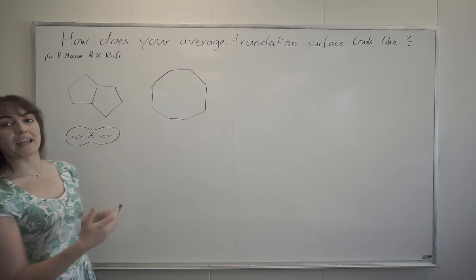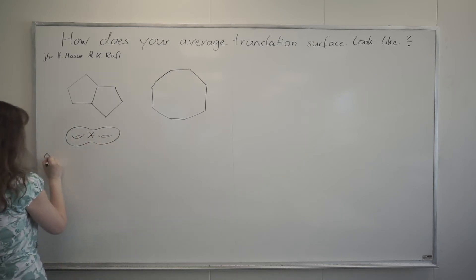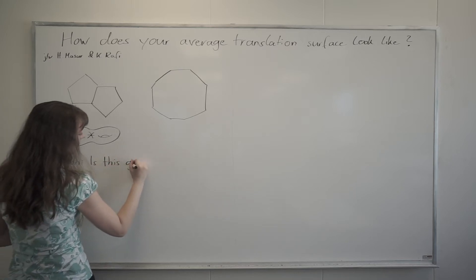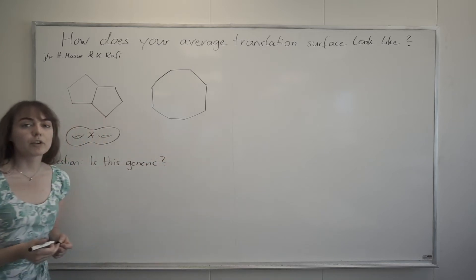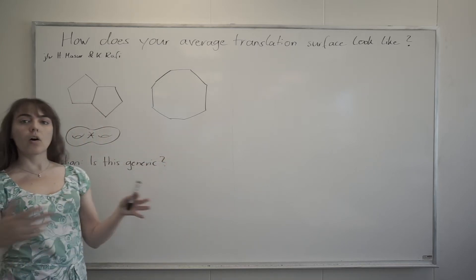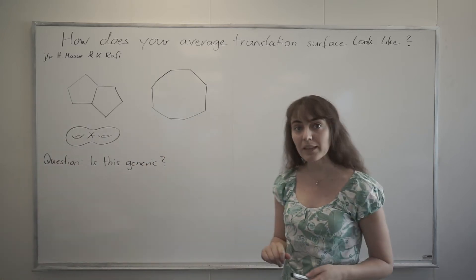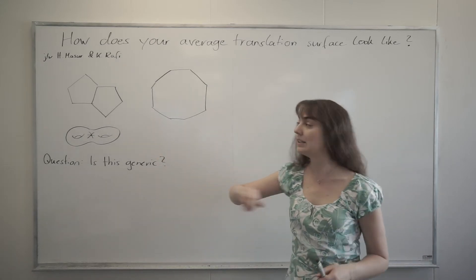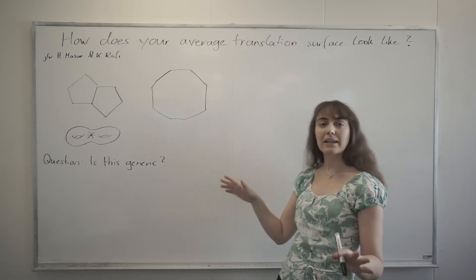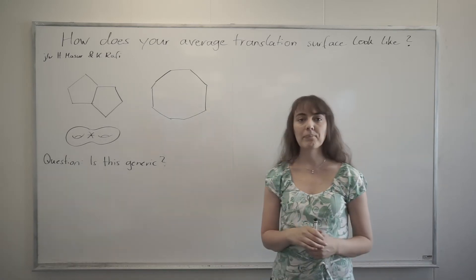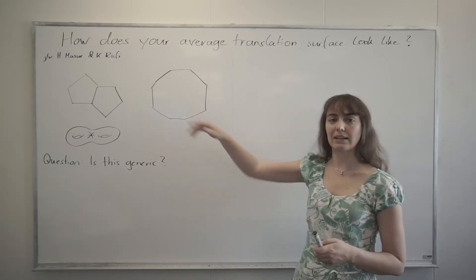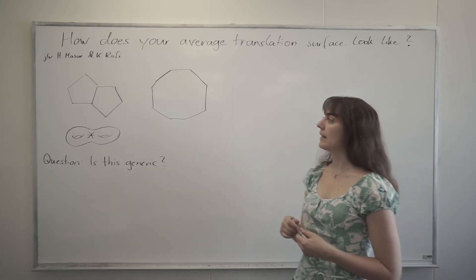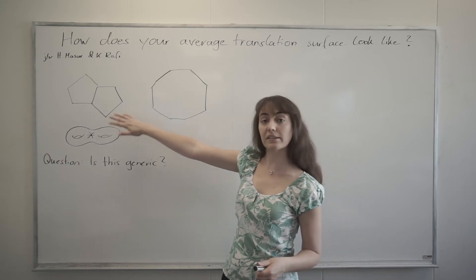But the question is, everyone starts with that, but is this generic? And what I mean by generic is if you take all the translation surfaces of genus 2 and you pick one randomly, is it likely that you get this translation surface or perhaps this? Now they're infinitely many so it's not likely that you get exactly this but something like this. Now something like this, what does that mean?